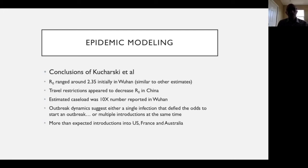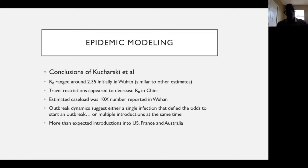They did sensitivity analyses looking at the impact of multiple introductions, concluding the dynamics suggest either a single infection that got lucky and started spreading, or multiple introductions around the same time. They noted more-than-expected introductions in the US, France, and Australia — important because we now have evidence of community transmission in the US in mid-to-late January, and in France as early as December.